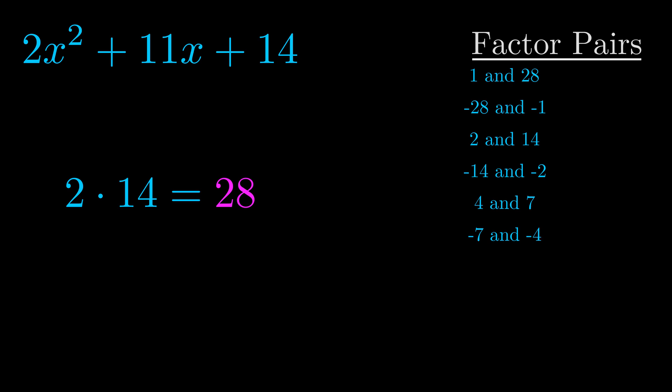The b value is the coefficient on the x term. That's the middle term, the one that we haven't done anything with yet.